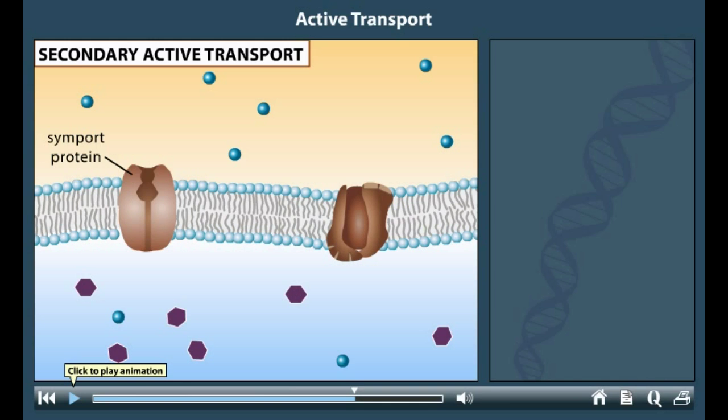The sodium ions that enter the cell are later returned to the outside by the action of the sodium-potassium pump. This process, called primary active transport, creates sodium and potassium ion gradients at the expense of ATP.